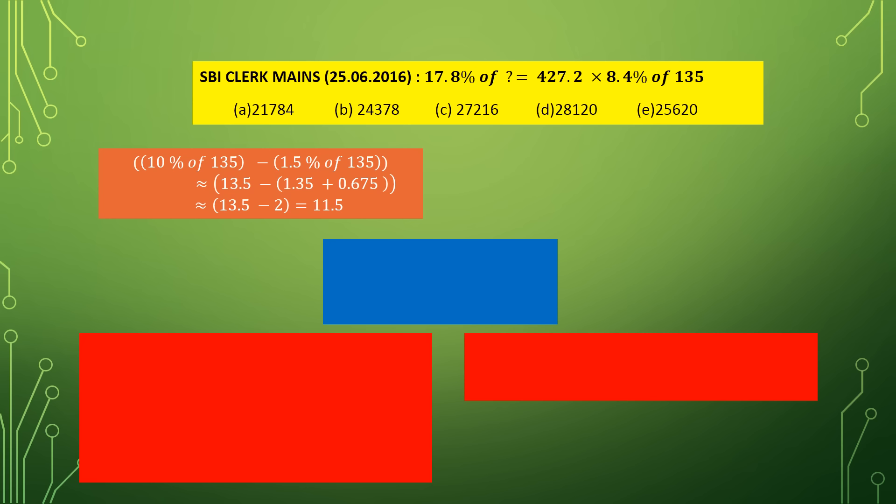There is another important trick: if we have to calculate x% of 135, try to divide 100 by x. If it comes close to an exact integer, divide the number by that integer. In this example, 100 divided by 8.4 is approximately 12, so we divide 135 by 12, giving approximately 11.5. For example, to calculate 14% of 500: since 14 into 7 is 98, meaning 100 divided by 14 is approximately 7, we do 500 divided by 7.